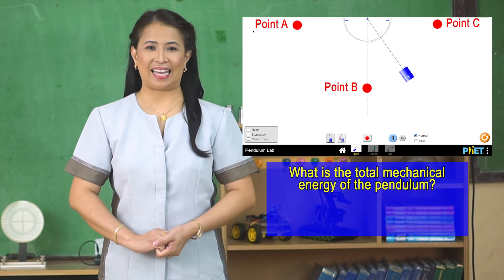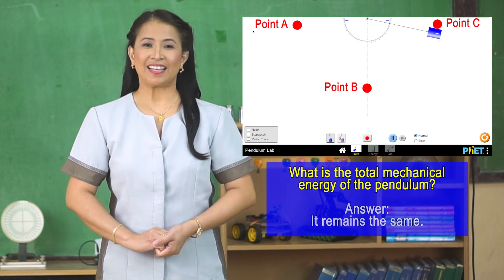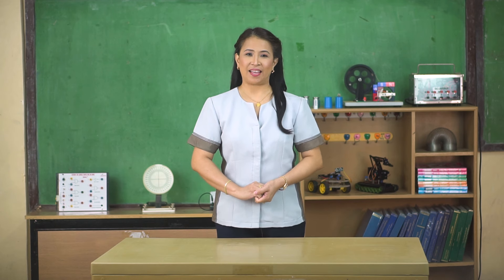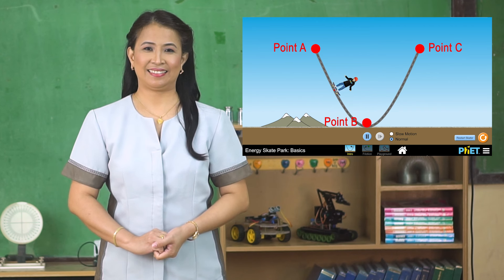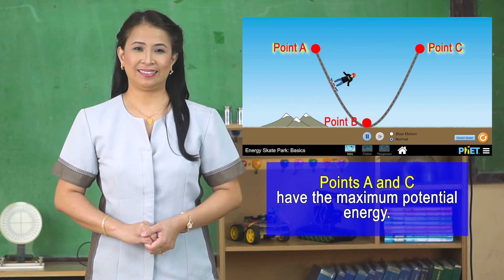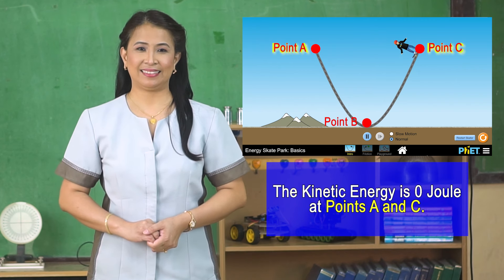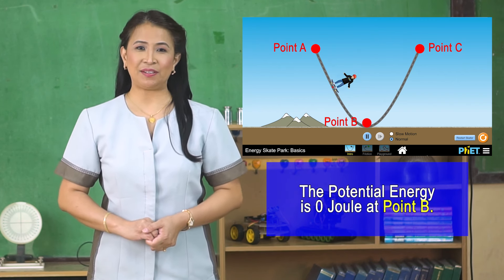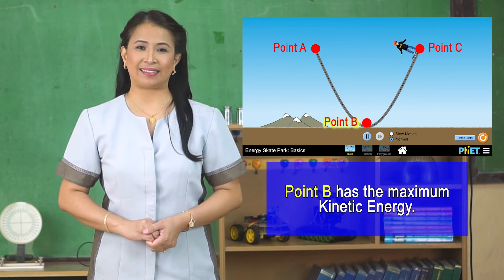What is the total mechanical energy of the pendulum? Let's see another simulation. Points A and C have the maximum potential energy. The kinetic energy is zero at points A and C. The potential energy is zero at point B. Point B has the maximum kinetic energy.